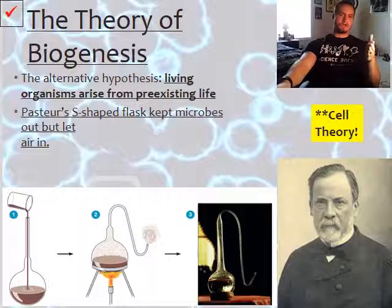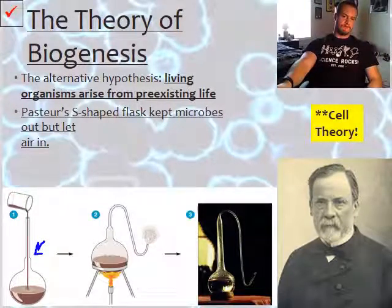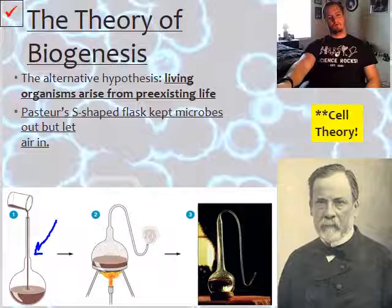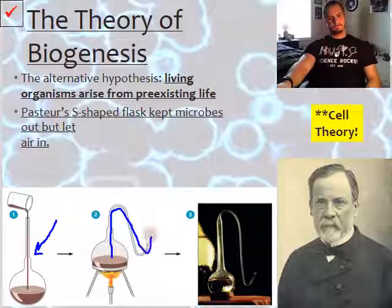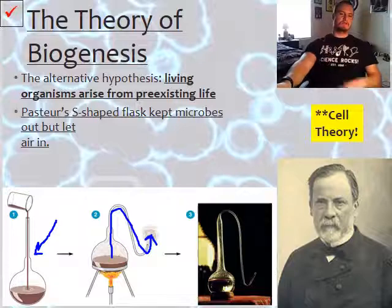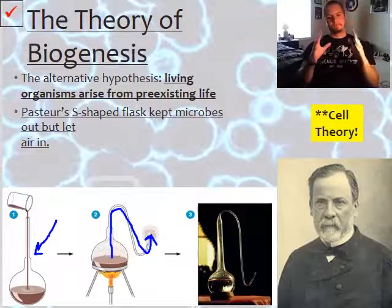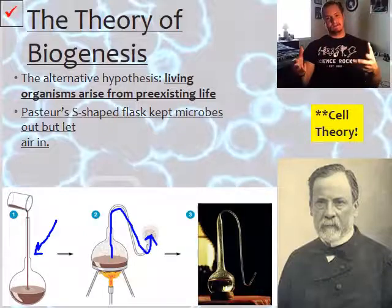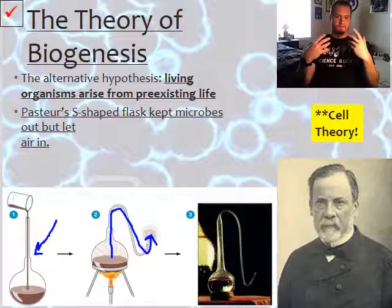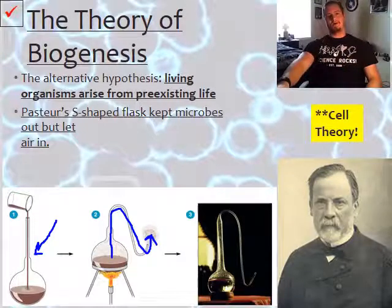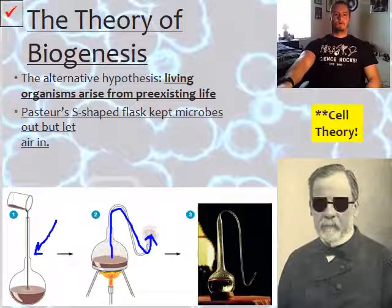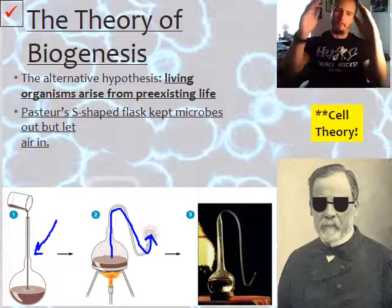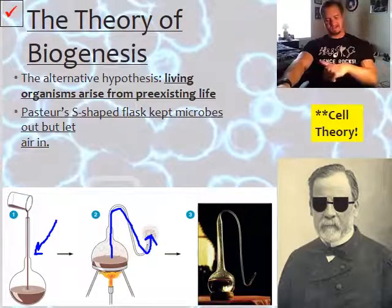Using his S-shaped flask, Pasteur poured the wine in — the wine had bacteria — then he heated it up. As he did, air escaped and no microbes could get back in, so anything inside was being killed off. This saved the wine from spoiling. This process became known as pasteurization, and it's still used today to heat-treat liquids to kill bacteria so we don't get sick.